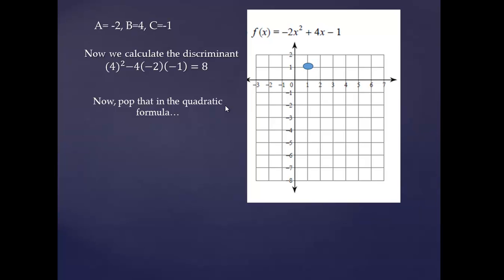Now we pop that in the quadratic formula. So negative b plus or minus square root of the discriminant over 2a. So I'm going to go ahead and simplify that square root. Square root of 8 simplifies to 2 square root of 2. We've done this a lot in class, but you should check your notes on this one. So I come out with something like this.